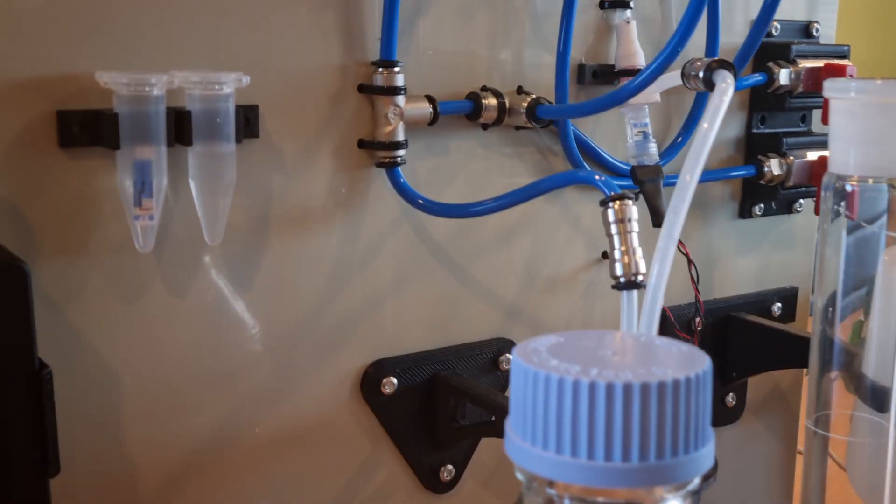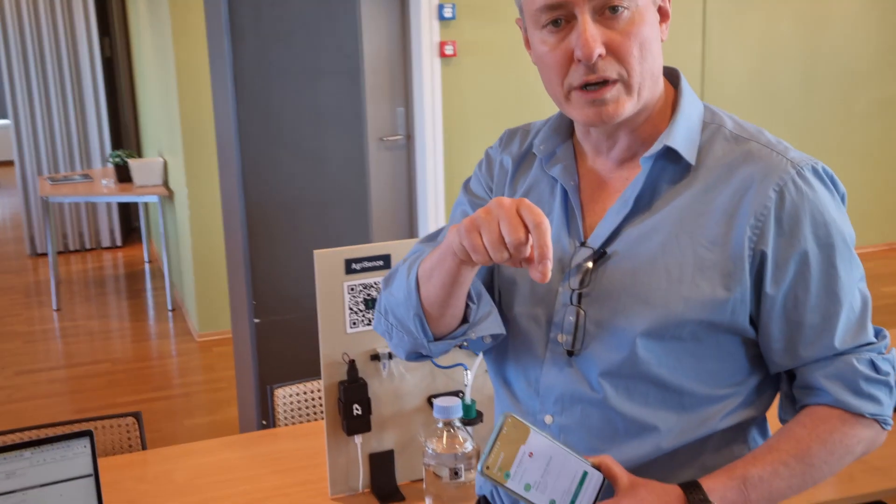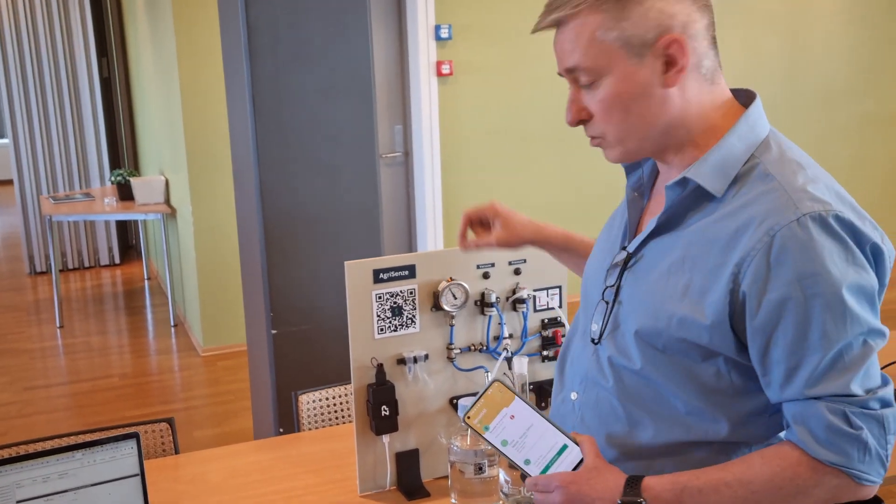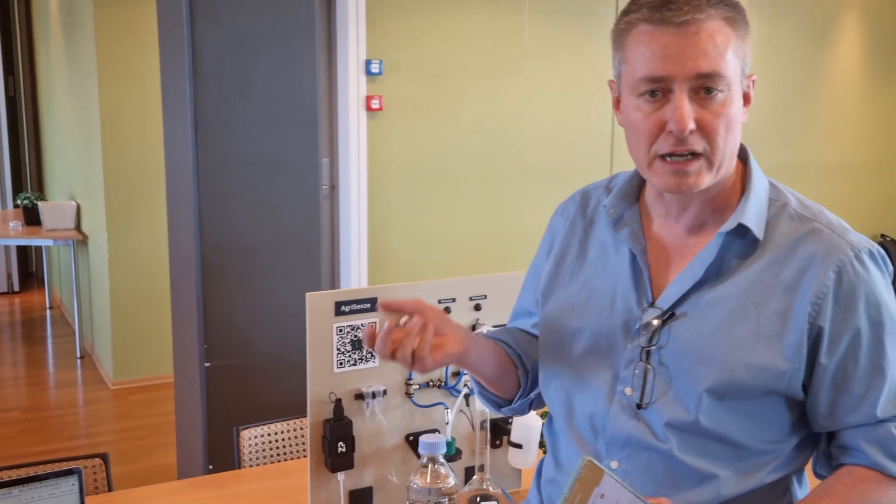So what this little setup shows you is we have a sensor, we're able to pull from a liquid reservoir, go over the sensor and go to waste, and we have a couple of pumps that are able to provide vacuum and pressure.